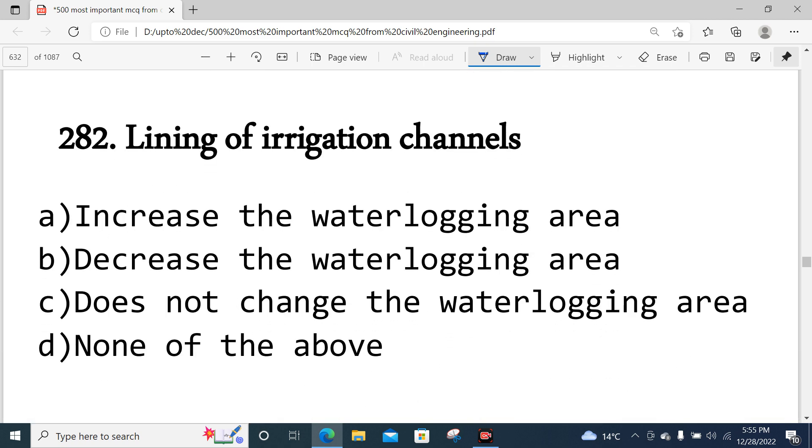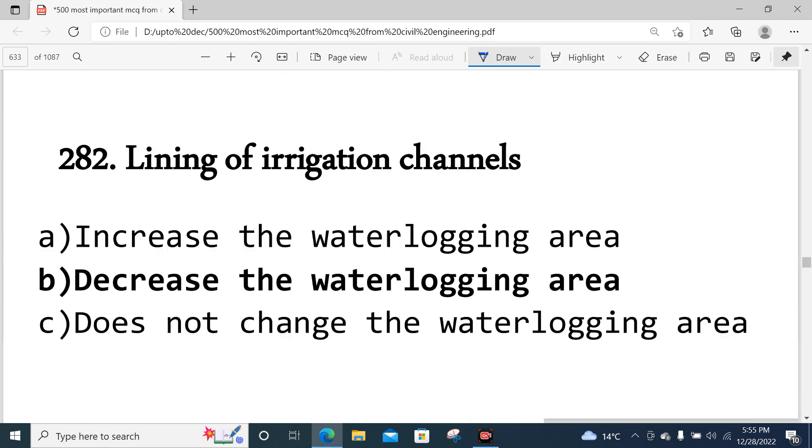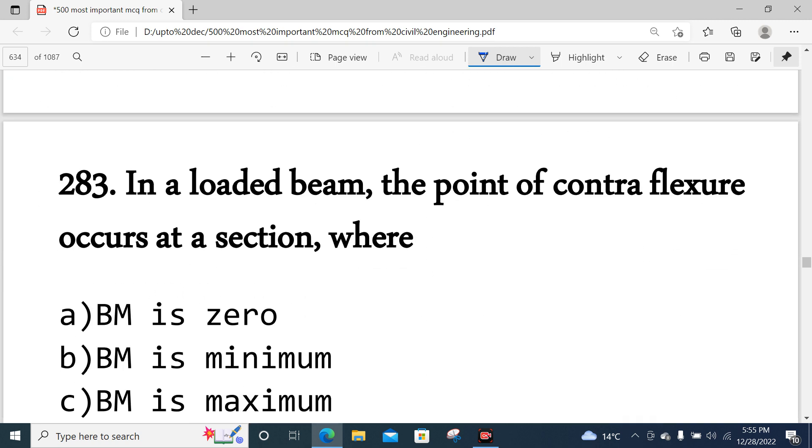Question 282: The lining in canal - the main reason is to prevent water logging in the area. When we do lining, we don't need to worry about water logging area. Option B will be correct.